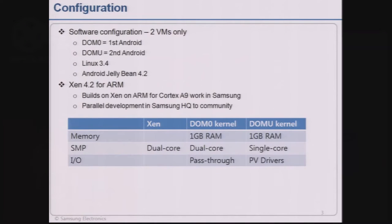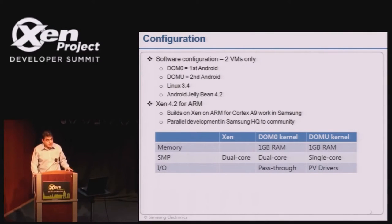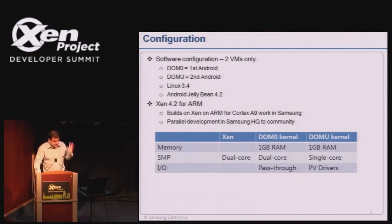In software, we have two VMs running in Xen. DOM0 is amalgamated with the first Android, and DOMU is our second Android — no more VMs. We're running Linux 3.4, the standard Android Linux kernel, and Android Jelly Bean. The Xen we're using is a parallel development done at Samsung, based on the Xen on ARM A9 code released previously, modified to work with the ARM A15 chipset — a parallel development both in the UK and in headquarters in Korea.